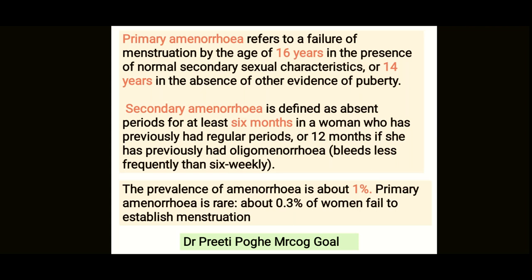The prevalence of amenorrhea is about one percent. Primary amenorrhea is rare — about 0.3 percent of women fail to establish menstruation.